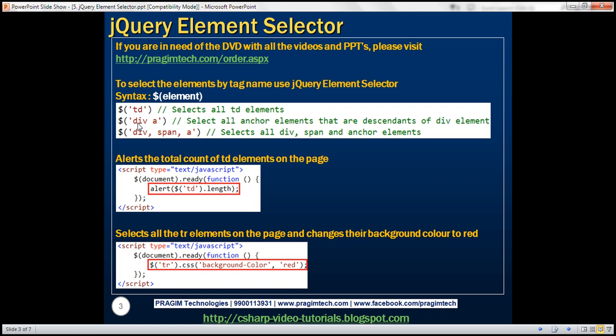The second example is going to select all the anchor elements that are descendants of a div element. The div element is the ancestor element and the anchor element is the descendant element. This selector is going to give us all the anchor elements that are nested inside a div element, no matter how deep the nesting is — as long as an anchor element is present in a div element, it returns all such anchor elements.